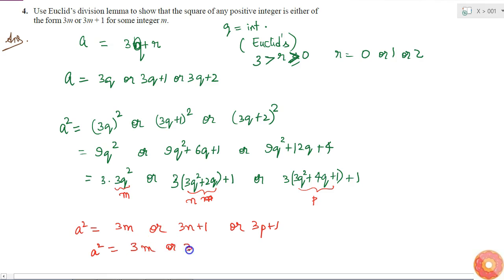So every square of every positive integer a, that is a², I can write as 3M or 3M + 1 for some value of M. This is always possible for any value of a. That is what I have to prove here.